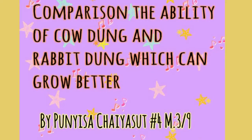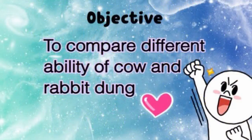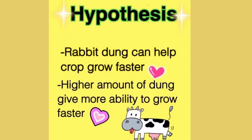My objective is to compare the difference between cow dung and rabbit dung. My hypothesis is that rabbit dung can grow the crop faster, and a higher amount of fertilizer can make the crop grow faster.